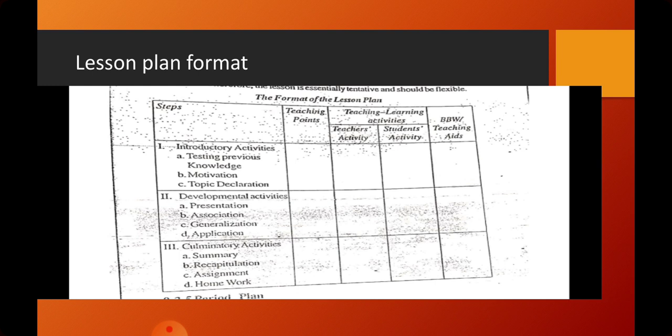We can also add one more column at the extreme left of the format, which is the Serial Number. So the complete format of the lesson plan includes: Serial Number, Teaching Steps, Teaching Points or Content Analysis, and Teaching-Learning Activities — specifically the Teacher's Activity in a separate column and the Student or Learner Activity in another. The last column is Blackboard Work or Teaching-Learning Material.